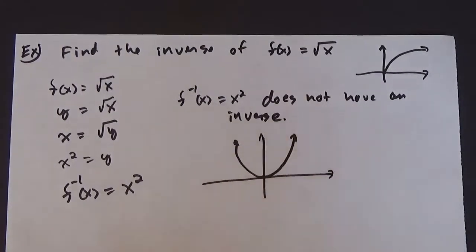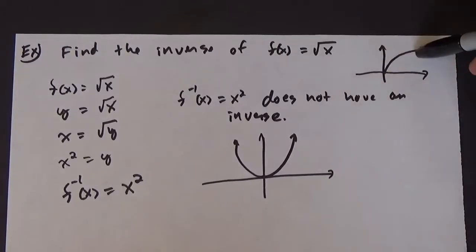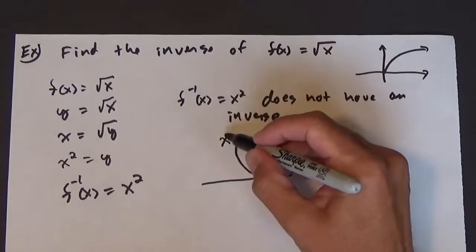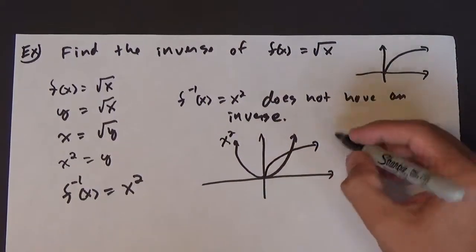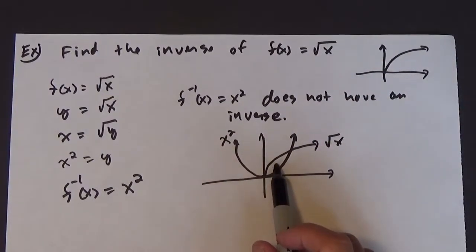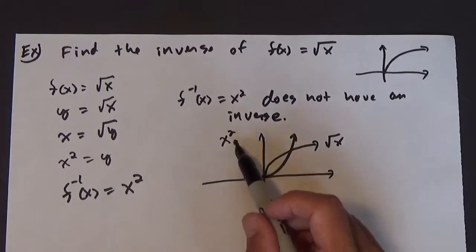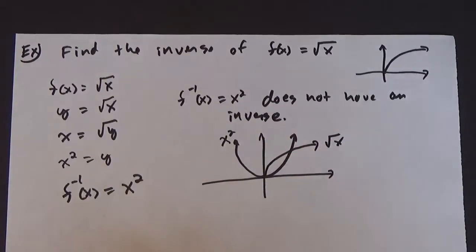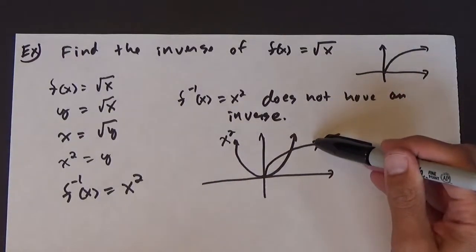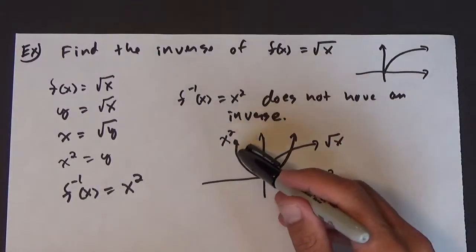If we compare these two graphs, remember that when you graph the inverse, it's a reflection over the line y = x. If I graph x² alongside √x, notice that x² is not the graph of √x reflected over y = x — we have this extra part. This is where the domain issue comes up: sometimes you start with a function that has an inverse, but when you find it, there's a bit too much.